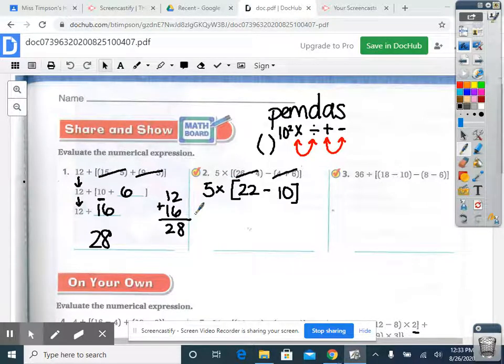Now I'm in my second step, and I still have brackets, which is a grouping symbol that falls under the P in PEMDAS. So I need to solve that first. So twenty-two minus ten, that is twelve. I bring down my five times. So five times twelve, that's one of our multiplication facts that we should know. Five times twelve is sixty.